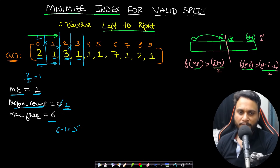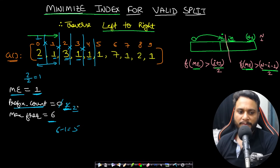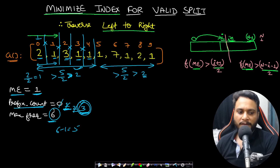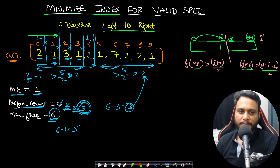Move forward: another 1 equals the majority element, so the prefix counter becomes 2. It must occur more than 2 times on a left side of size 4, but it only occurs exactly 2 times — not valid. Move forward: another 1 increments the prefix counter to 3. Now, is 3 greater than 5/2? Yes, more than 2 times — valid on the left. On the right, 5 items require more than 2 occurrences; total frequency 6 minus left count 3 equals 3, which is greater than 2. This is the first valid split at index 4.